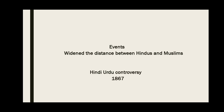Now we will discuss the events which widened the distance between Hindus and Muslims. Number one is the Hindi-Urdu controversy. Sir Sayyid Ahmad Khan was the first person who presented the two-nation theory. In the beginning, he was in favor of Hindu-Muslim unity. But after the event of 1867, the Hindi-Urdu controversy, he changed his mind.